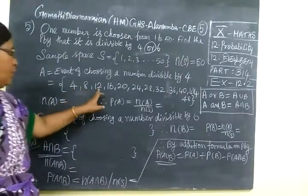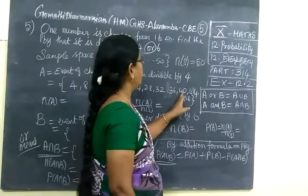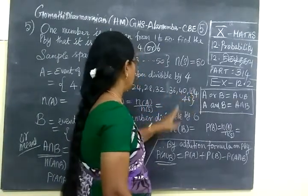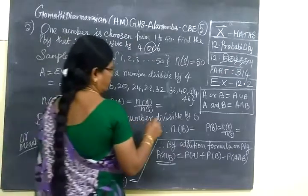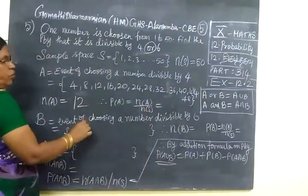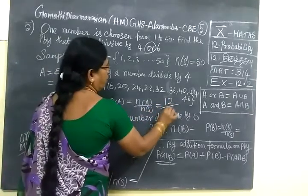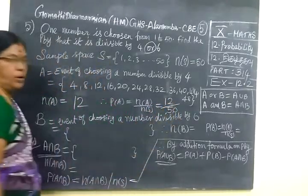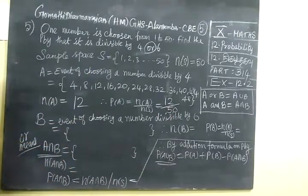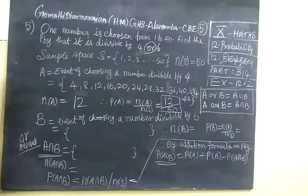Since up to 50 we start up to this. So you are counting 1, 2, 3, 4, 5, 6, 7, 8, 9, 10, 11, 12. So N of A equal to 12. So P of A equal to N of A by N of S. Don't cancel it now. In the last step we cancel it. So we have found P of A.